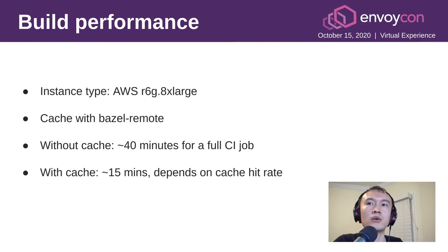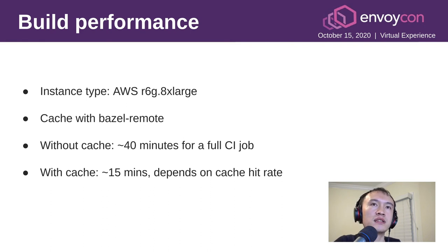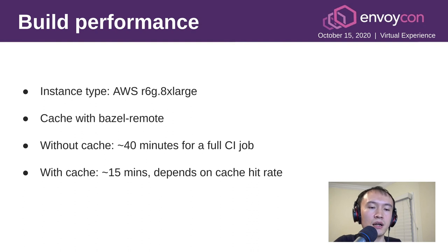Let's talk about build performance. We use the AWS R6g.8xlarge instance, which has 32 cores and 256 gigabytes of memory. We do caching with Bazel Remote, which helps a lot with build performance. Without cache, a full CI job costs about 40 minutes. With the cache, it normally runs within 15 minutes, including pulling the build Docker image and producing test results.